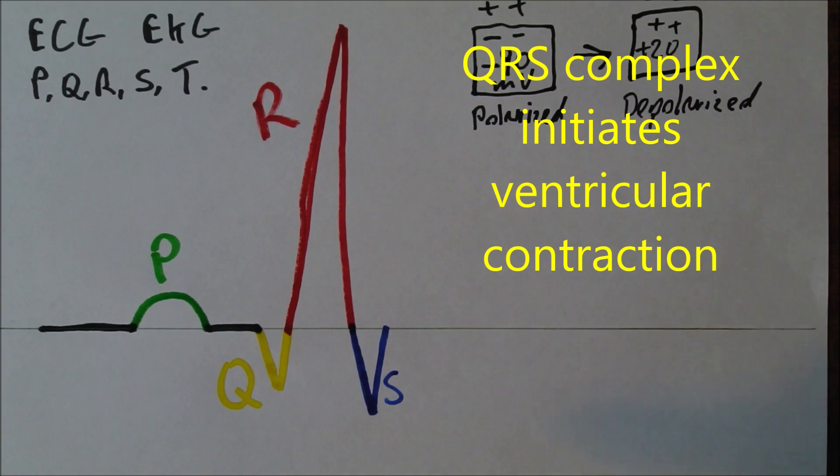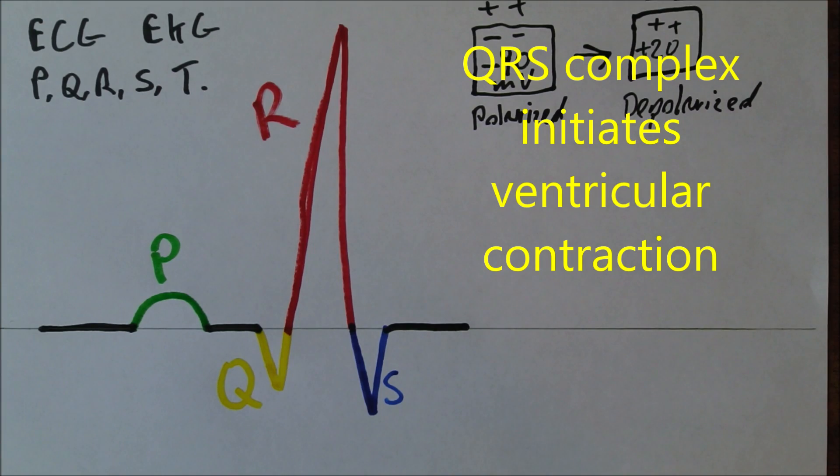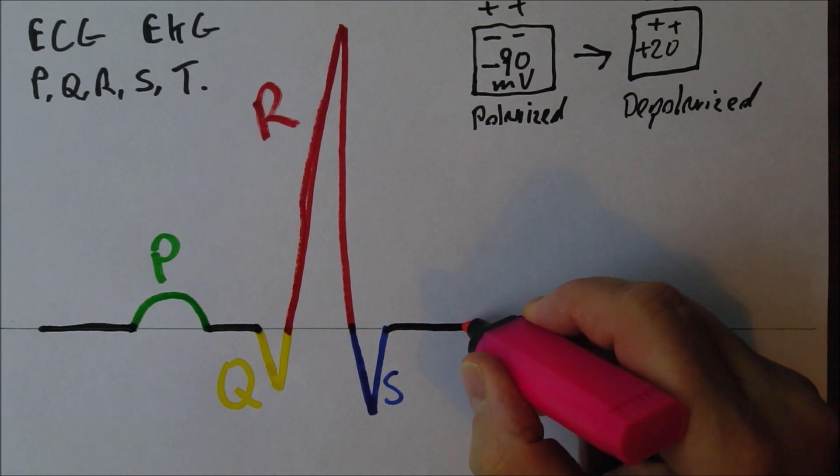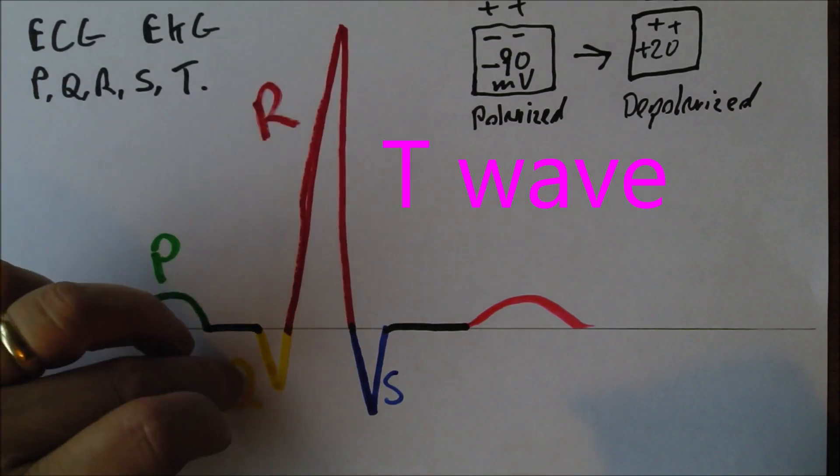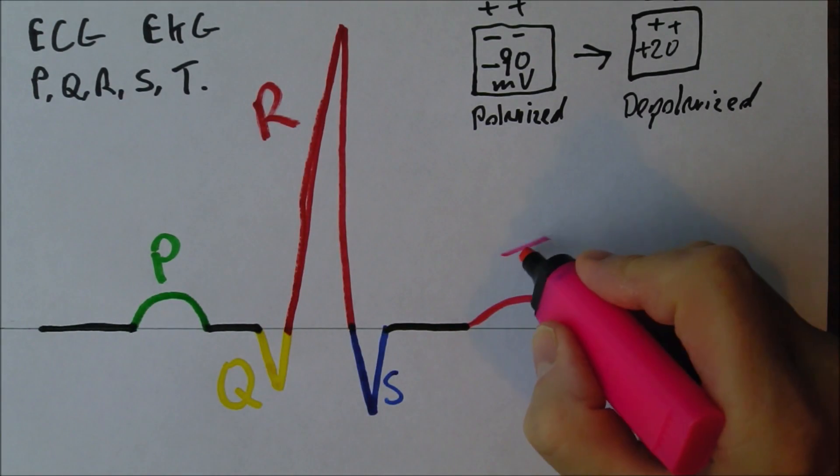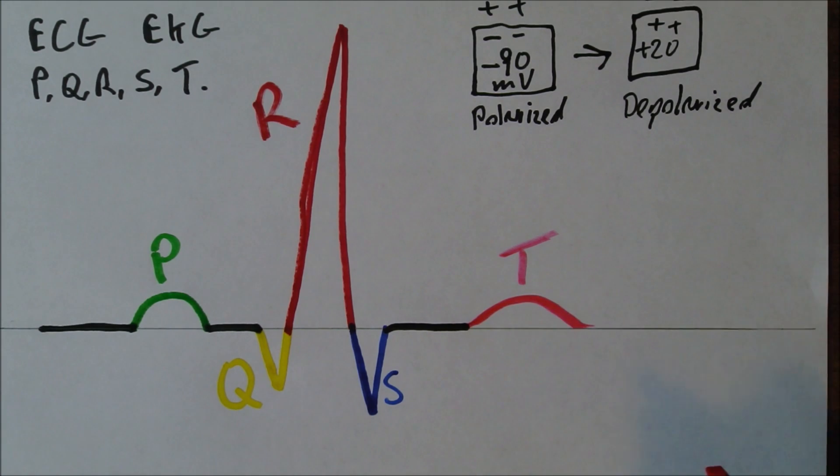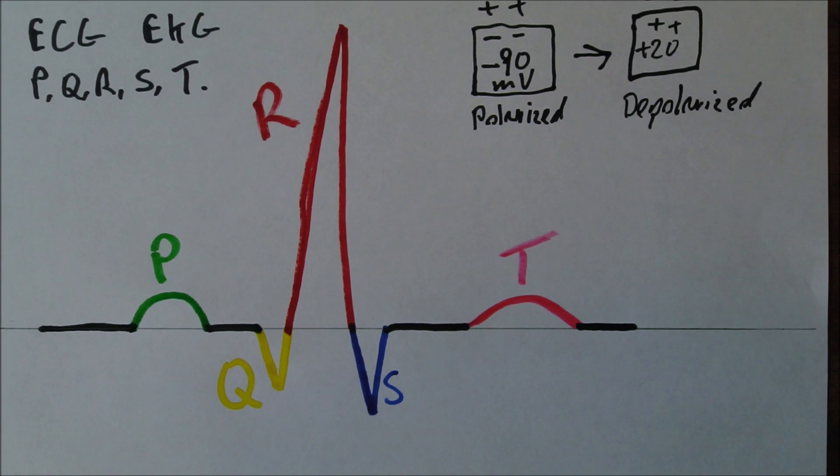And then we have a little more isoelectric line here. And then we have the final wave. Well we normally count it as the final wave which is the T. The T wave. So P, Q, R, S and T. And again we notice the T wave is the upward deflection and the downward deflection. That's what counts as the T wave. And then we have some more isoelectric line prior to the next P wave.